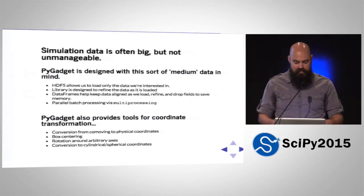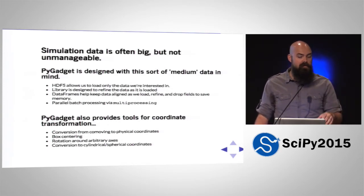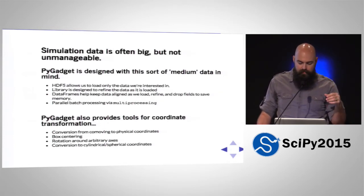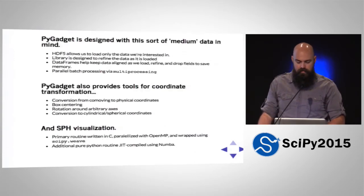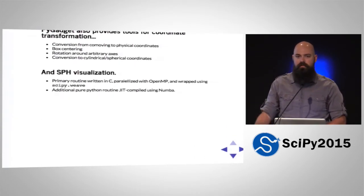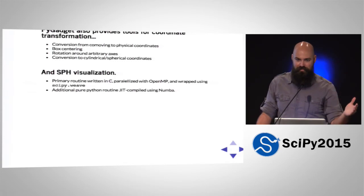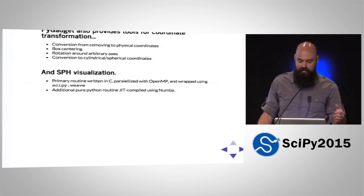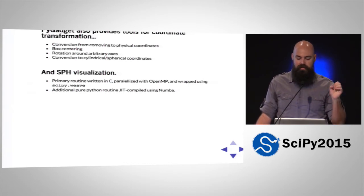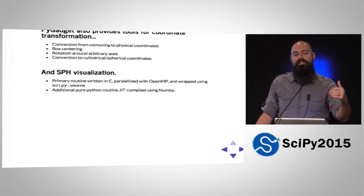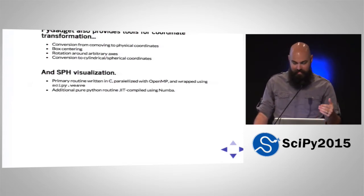PyGadget also provides tools for coordinate transformations — conversions from co-moving to physical coordinates, recentering the box, rotations around arbitrary axes, and conversions to cylindrical or spherical coordinates. For SPH simulation data, visualization is a tricky problem — it requires a triply nested loop over millions of particles — so there's a C routine parallelized with OpenMP and wrapped in SciPy Weave, plus a pure Python routine JIT-compiled using Numba that's only twice as slow as the OpenMP version.